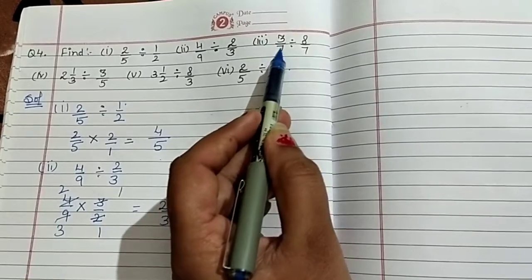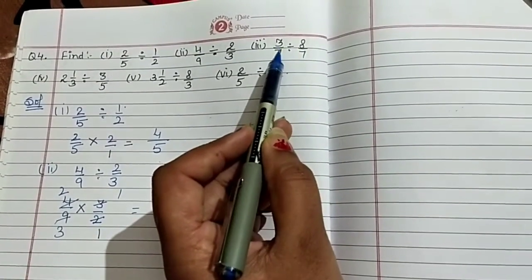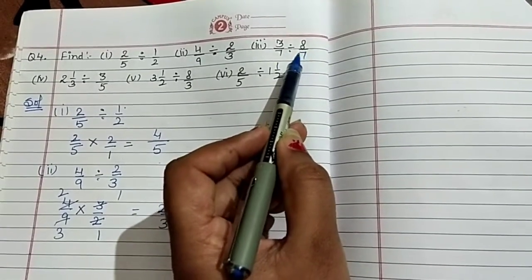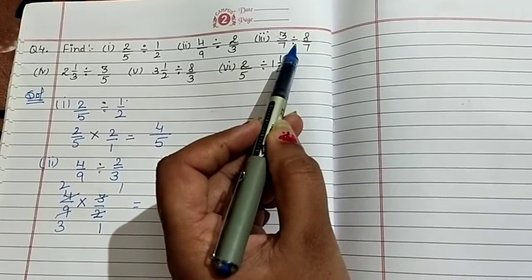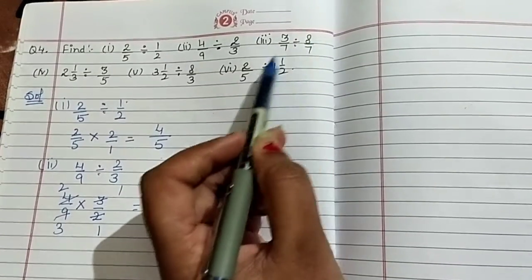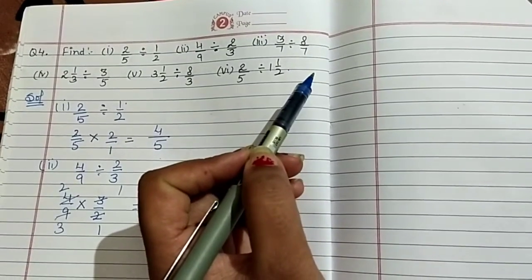Here 3 by 7 divided by 8 by 7. First term take as it is and take reciprocal of second term that is 7 by 8. Division sign changes to multiplication. Diagonal cut to each other. Your answer is 3 by 8.